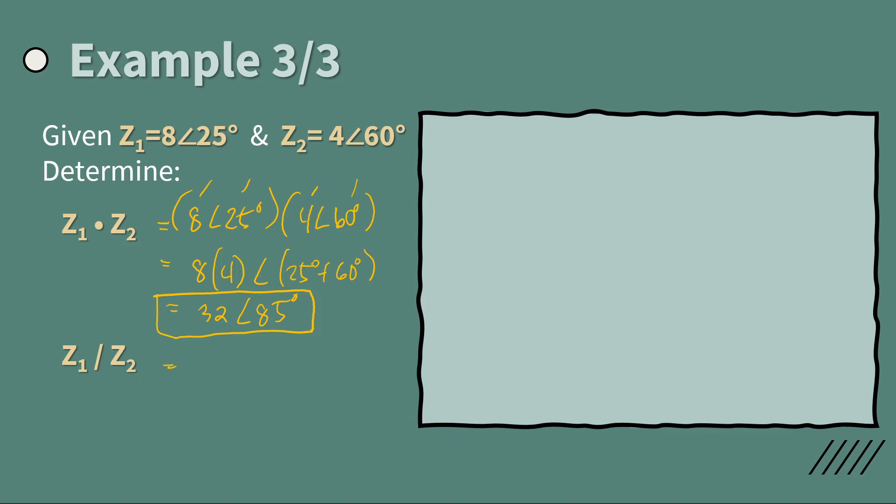Now for the division, very simple. Similar to the product. So you have Z1, which is 8 angle 25, divided by 4 angle 60. If you see the pattern in the product, this is actually 8 divided by 4, so take the division of the modulus and then for the angle, take the subtraction.